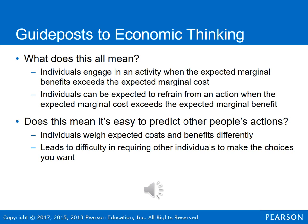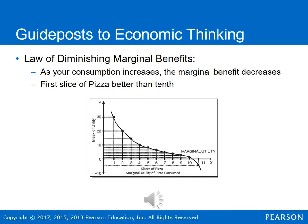Individuals weigh expected costs and benefits differently, which leads to difficulty in requiring other individuals to make the choices that you want — and that's very important. When it comes to marginal benefits, there's the law of diminishing marginal benefits: over time, as you consume more and more units of a good or service, the marginal benefit that you receive decreases.